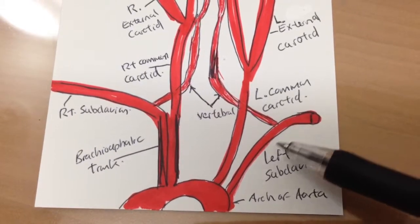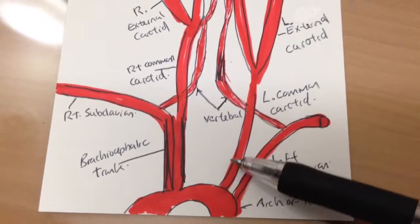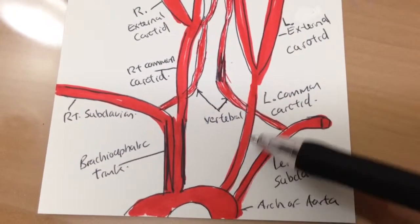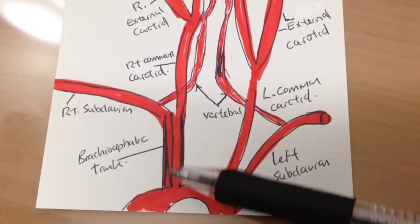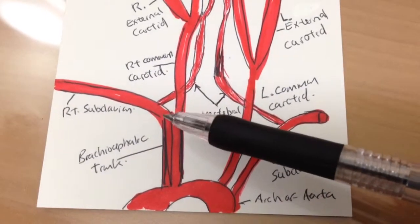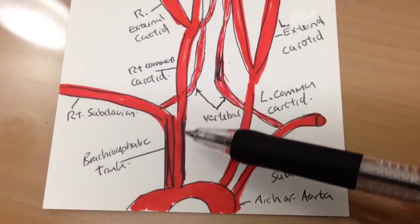We all know that on the left side we have the left subclavian and the left common carotid, and on the right side we have the brachiocephalic trunk which separates into the right subclavian and the right common carotid.